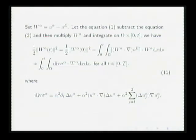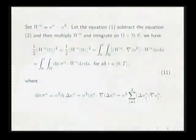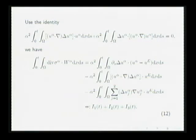Set w alpha as the difference of both solutions. And then let equation one subtract equation two and multiply w alpha and integrate in space and time. We have this encoding 11. Notice that the right side of 11, we set terms divergent data like this differential tensor. This identity by integral by parts, and U alpha vanishes on the boundary and is divergence free. We can prove this identity. We simplify this term and split into i1, i2, and i3.